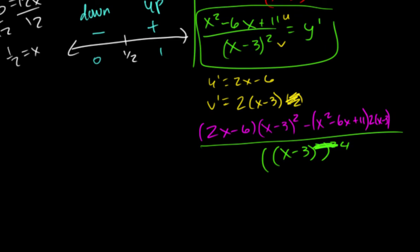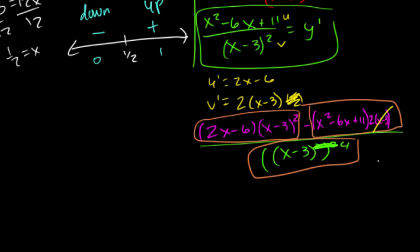Now, notice how all of the terms, so like this, this, and this, all have an x minus 3 in them. So we can get rid of one of the x minus 3s. This will become a 3. That'll go away and we'll be left with one of those. After this, we just need to distribute.